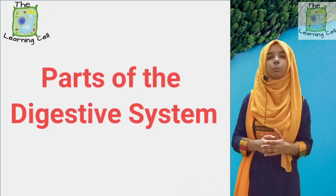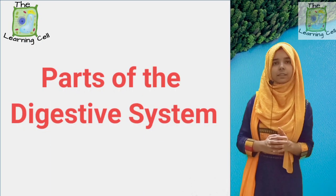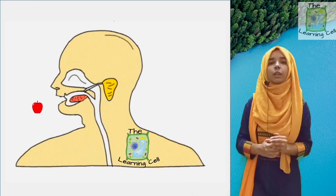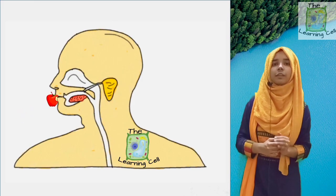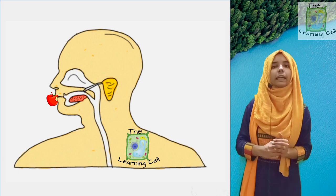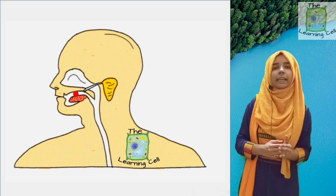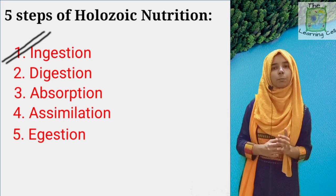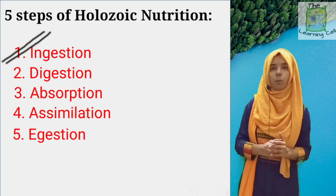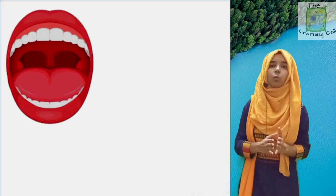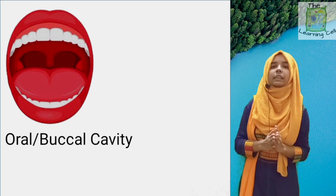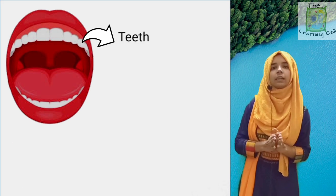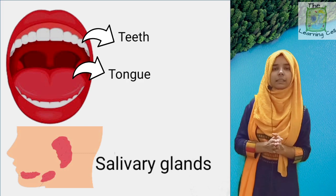Let us see how food moves through the different parts of our digestive system. Starting from the mouth, when we intake food, we complete the first step of nutrition called ingestion. The second step, which is known as digestion, also starts from the mouth. The mouth leads to an oral or buccal cavity which has three important structures: teeth, tongue, and the salivary glands.